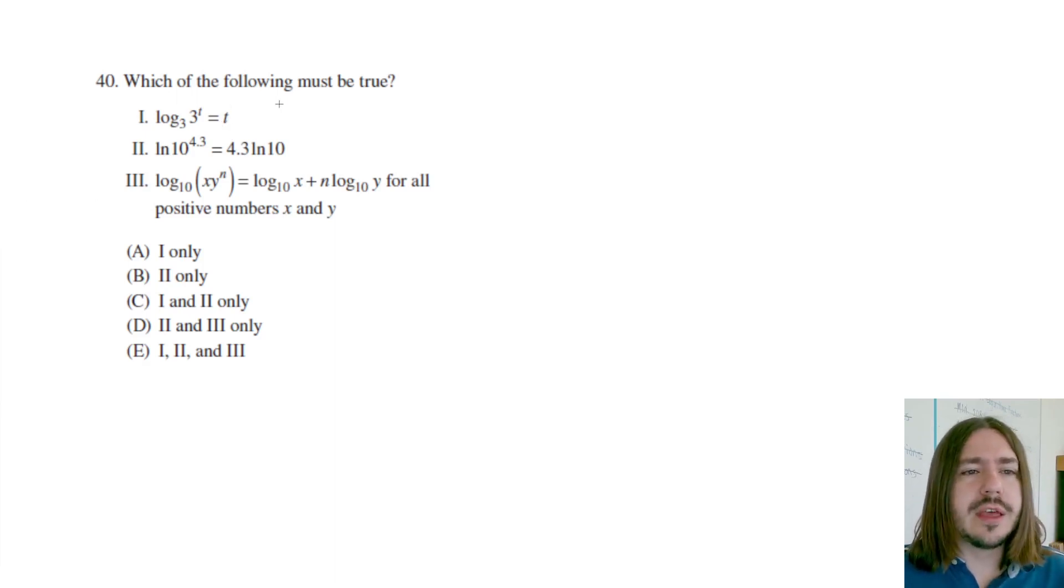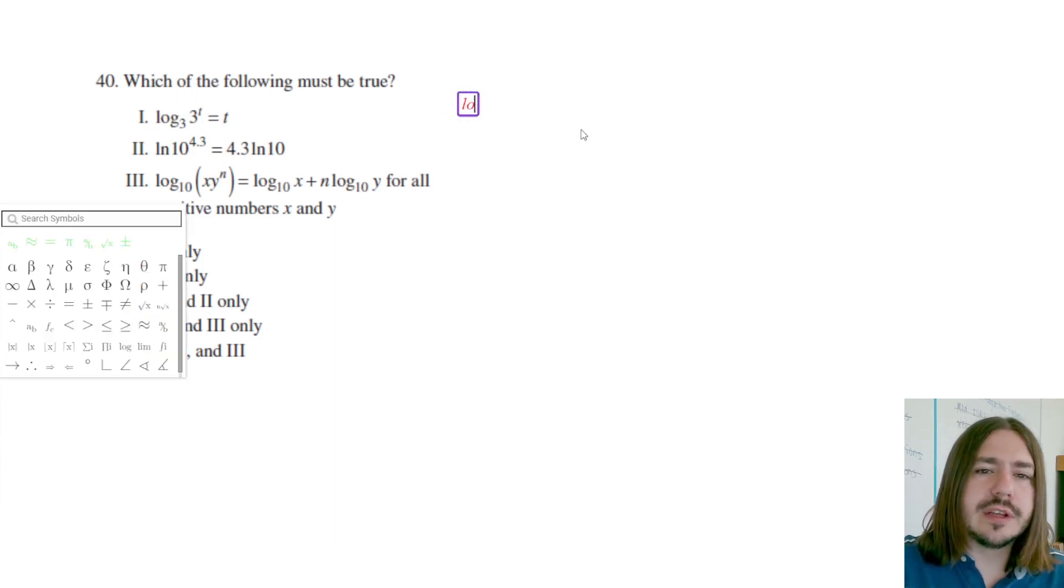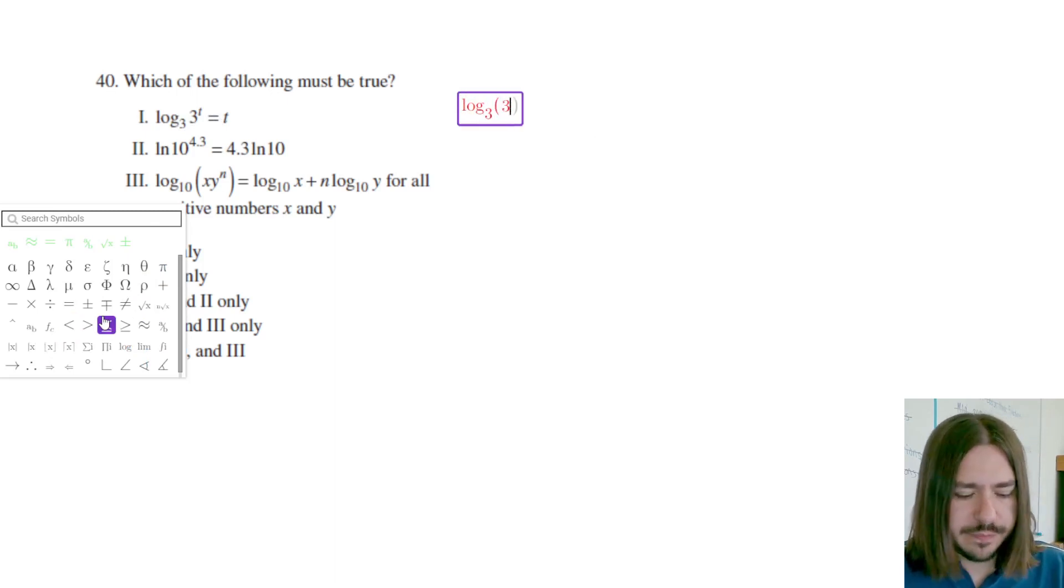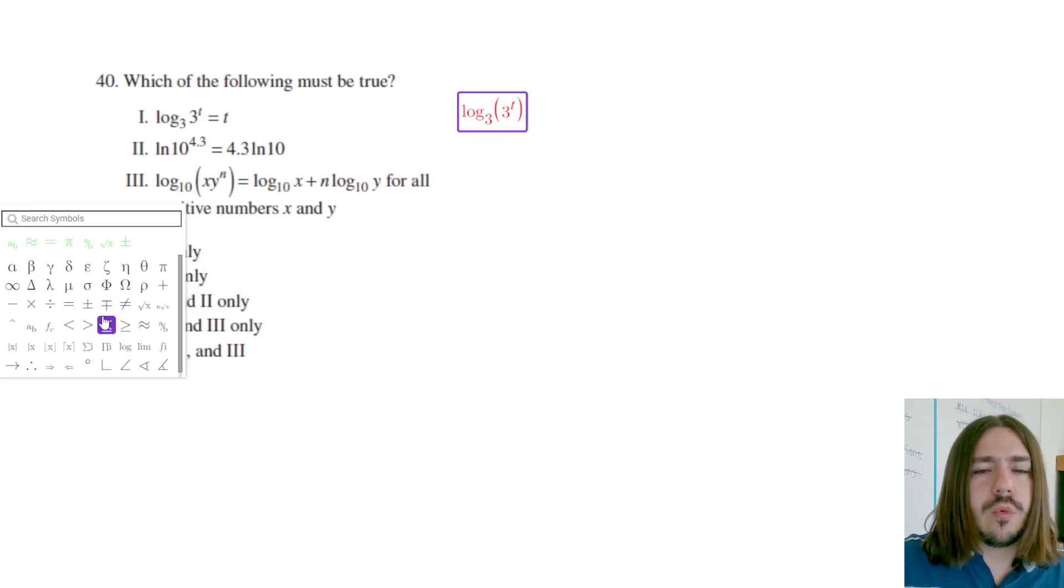We'll start with number one. It says log base 3 of 3 to the t equals t. Is that true or not? Well, logarithms are just exponents. So if I'm asking you to evaluate what is log base 3 of 3 to the t, what I'm really asking you to evaluate here is what exponent do I need to raise this base to to make it equal this power.